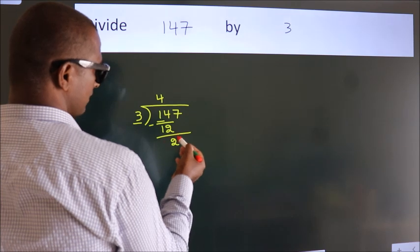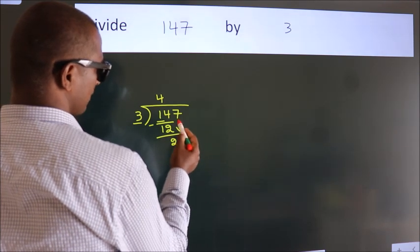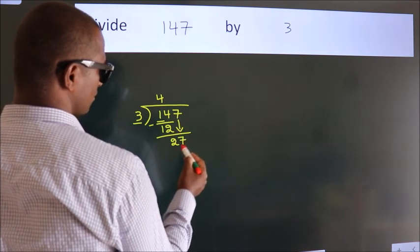After this, bring down the beside number. So 7 down. So 27.